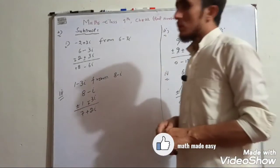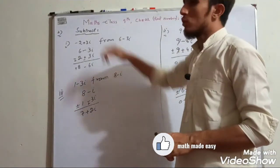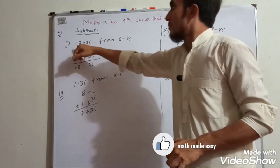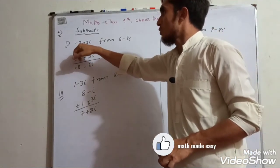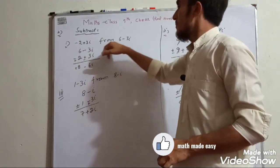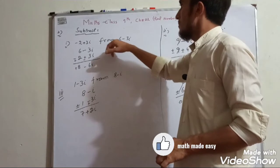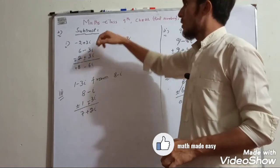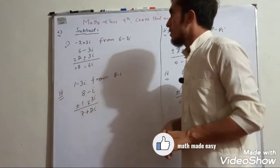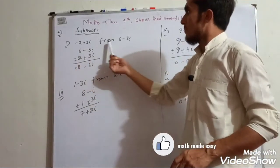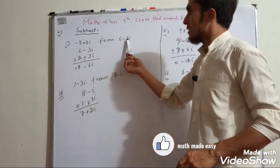Question number 2: subtract. Part one — subtract minus 2 plus 3 iota from 6 minus 3 iota.